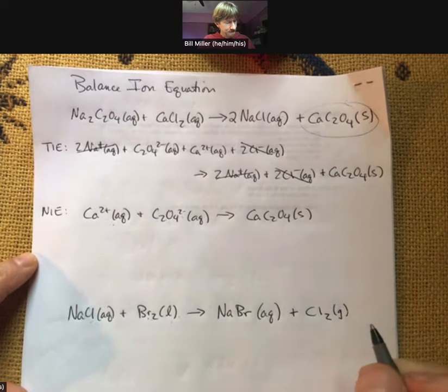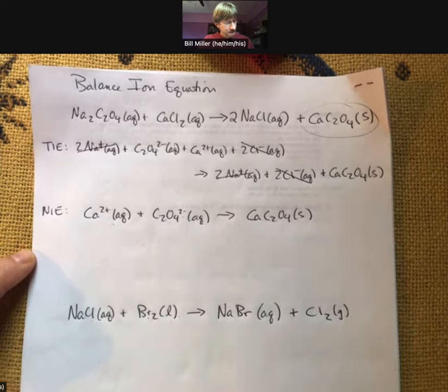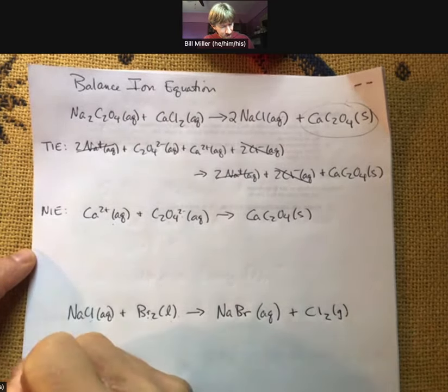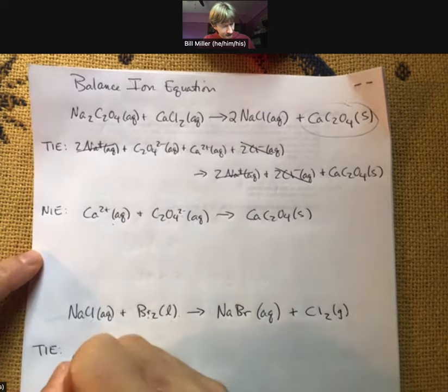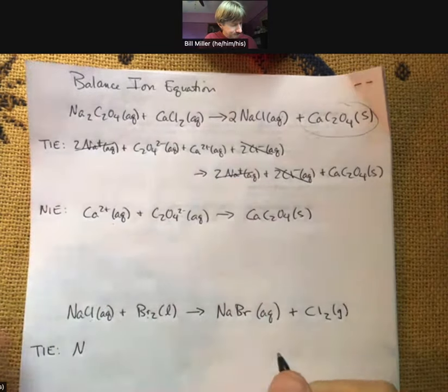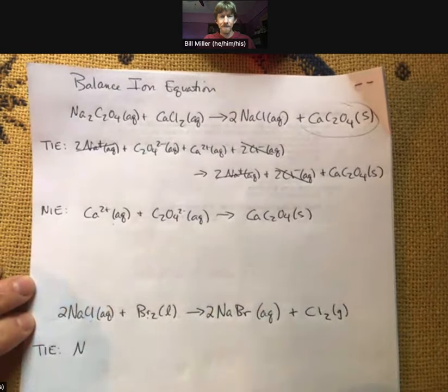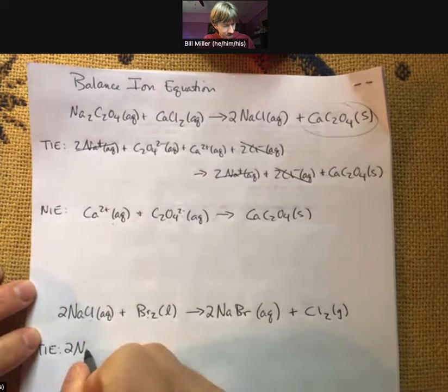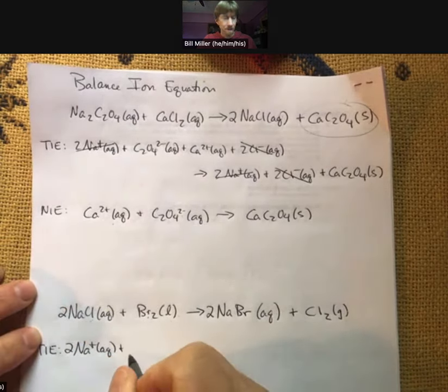That is what we'll call our overall reaction. From there we break up species for our total ionic equation that are soluble ionic compounds. Oh sorry, stop, balance. I need two of those and two of those, which means I need two sodiums plus two chlorides.